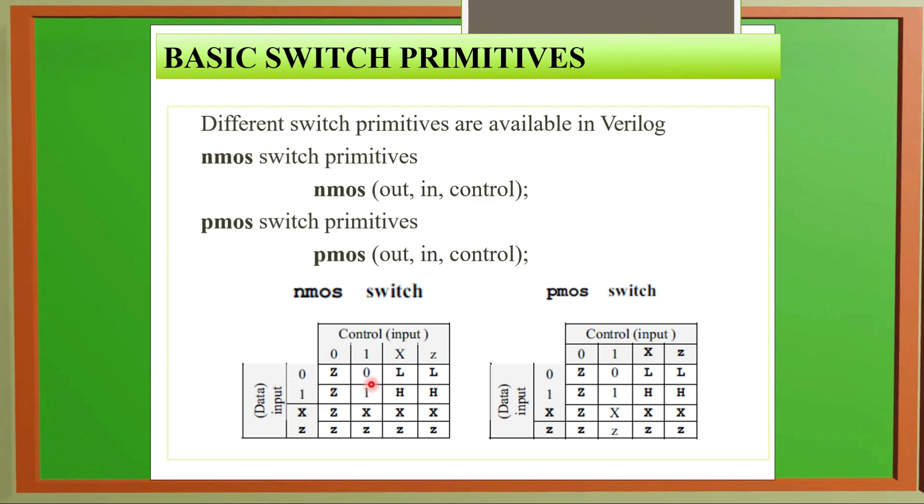We have pull up and pull down logic. When control is X unknown and input is zero, it will go low. For impedance and zero it is low. When control is zero, it is at high impedance. At data input if it is unknown, with zero control it is high impedance, otherwise all unknown.